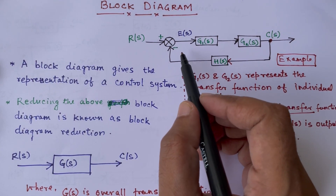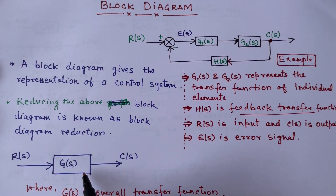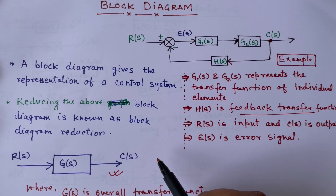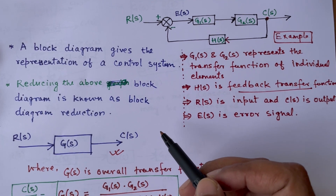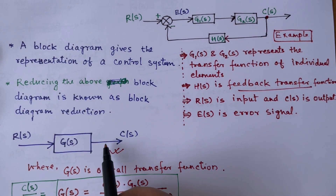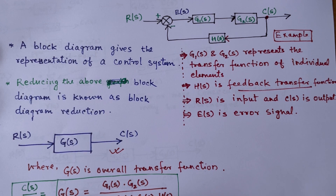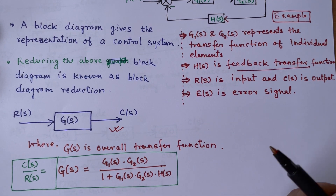The method of reducing an overall block diagram to a single block is called the block diagram reduction technique. The reduced block diagram transfer function will be G(s) = G1(s)·G2(s) / (1 + G1(s)·G2(s)·H(s)). We will see how we arrive at this through examples after understanding the reduction rules.